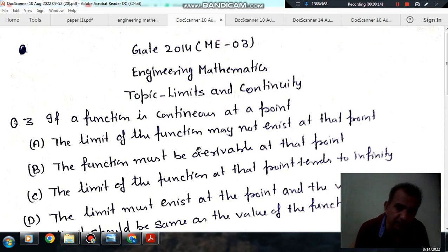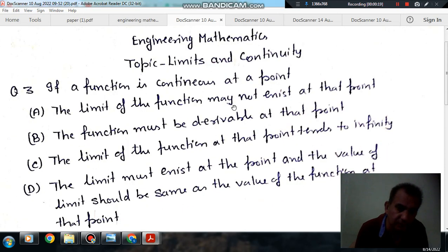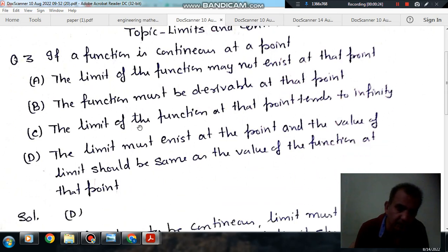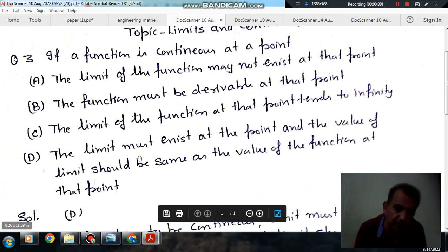If a function is continuous at a point, then option A: the limit of function may not exist at that point. Option B: the function must be derivable at that point. Option C: the limit of function at that point tends to infinity. Option D: the limit must exist at the point and the value of the limit should be same as the value of the function at that point.